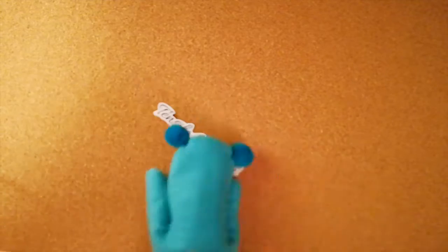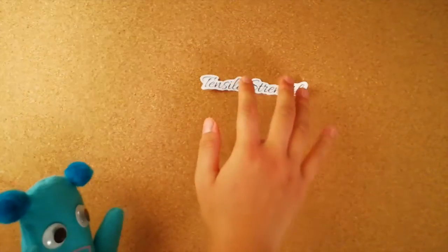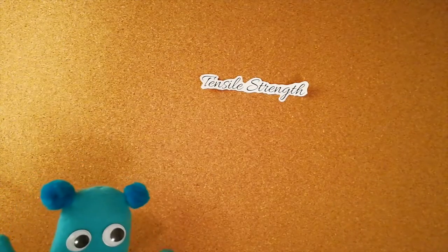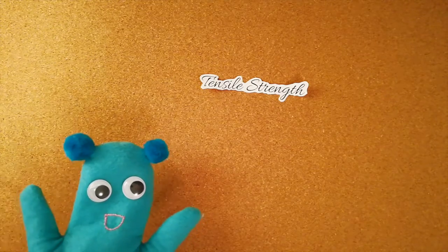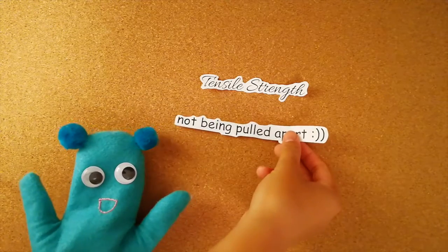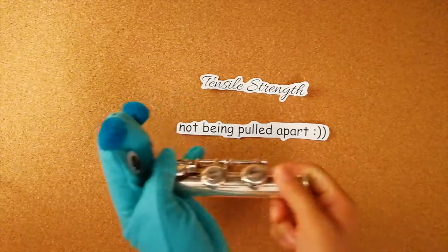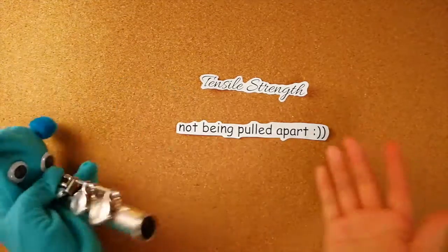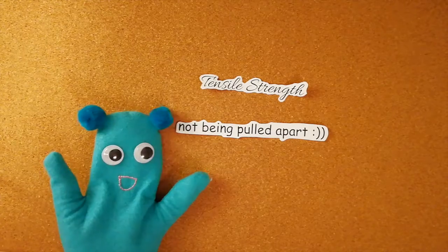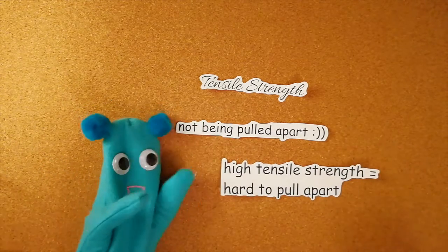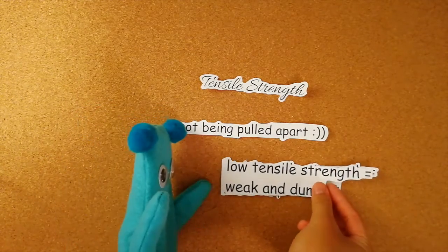The next property Bowie should consider is tensile strength, or sometimes known as UTS, ultimate tensile strength. This is how much a material can withstand tension or being pulled apart. When talking about engineering, it's important that materials have high tensile strength because it means they're not easily elongated. The higher a material's tensile strength, the more it can endure itself being pulled apart.